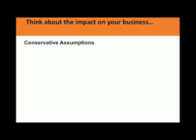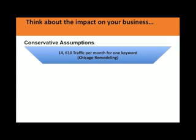We're going to take a look at some conservative assumptions on one keyword, and we're going to use an example of Chicago remodeler. If you're a Chicago remodeler, what kind of financial ROI you could get if you were able to, with that one keyword, get to the top level of Google. We know that there's 400-some-odd searches a day on the search term Chicago remodeling, and there's probably about 20 to 25 keywords that a Chicago remodeler would want to eventually target. You want to target at most five or six keywords at a time, and then as you win those, you go to other ones and build your business that way. Just using this one example of Chicago remodeling, that would translate to about 14,610 people per month that actually search for Chicago remodeling.